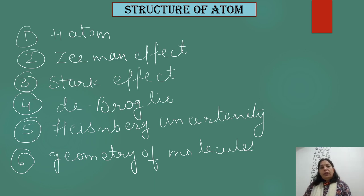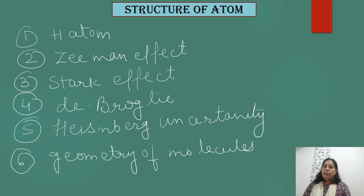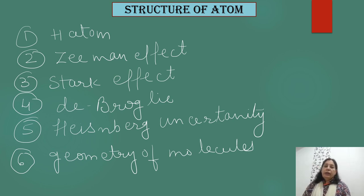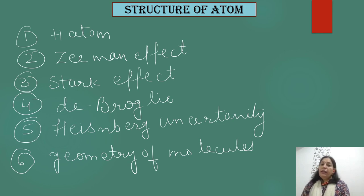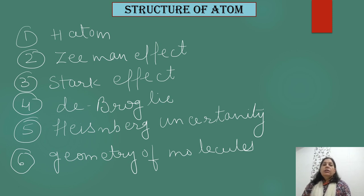Children, this is all for today. In our next video, we will discuss Heisenberg's uncertainty principle as well as de Broglie's dual nature of light and particles, as these two concepts are the basis of the quantum mechanical model of the atom introduced later on. If you have any doubt, write it in the comment box so I can help clear it. Thank you and have a nice day.